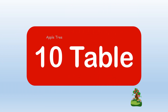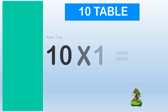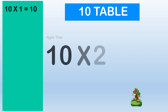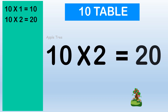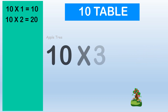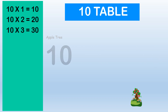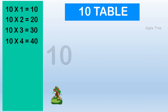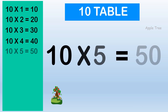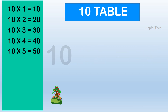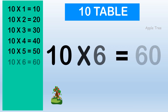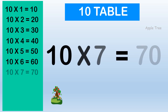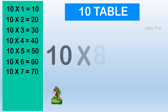Table for 10. 10 × 1 = 10, 10 × 2 = 20, 10 × 3 = 30, 10 × 4 = 40, 10 × 5 = 50, 10 × 6 = 60, 10 × 7 = 70.